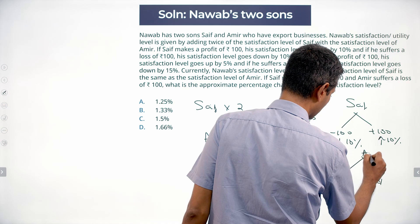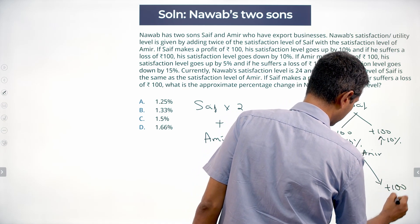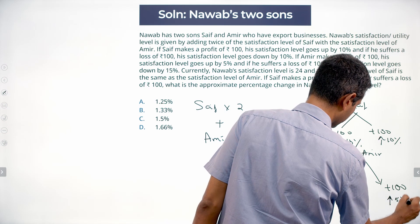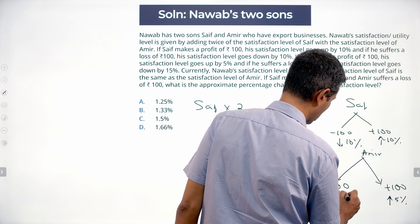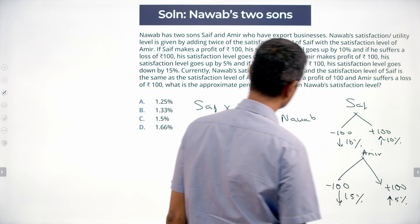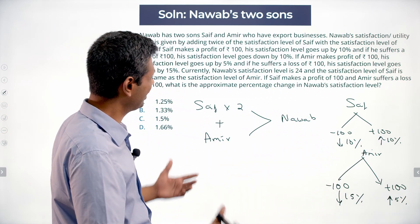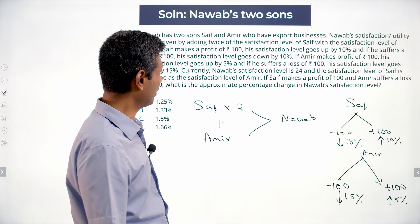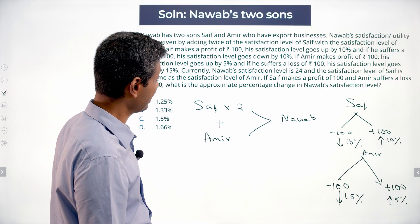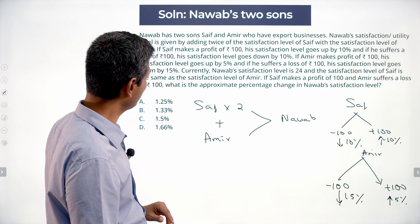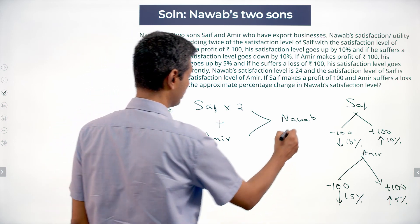So for Ameer: plus 100 means up 5%, minus 100 means down 15%. Now, Nawab's satisfaction level is 24, and the satisfaction level of Saif is the same as the satisfaction level of Ameer.